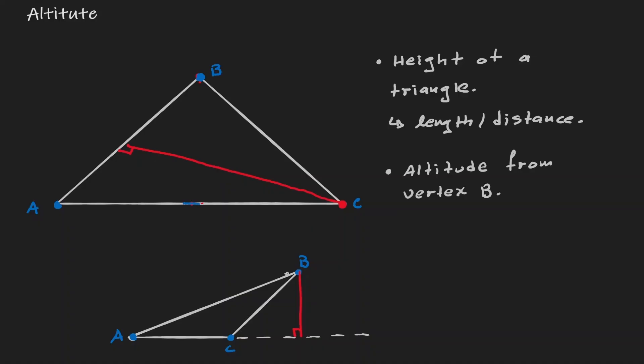Sometimes we might have to extend the opposite line in order to fully visualize how the altitude should look. Regardless of whether the altitude is inside or outside the triangle, the idea remains the same. By definition, an altitude is a perpendicular line starting from a vertex to the opposite side.